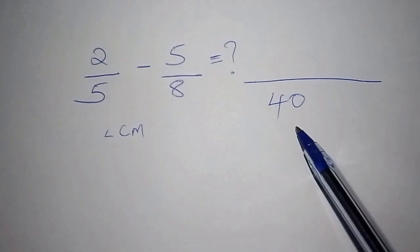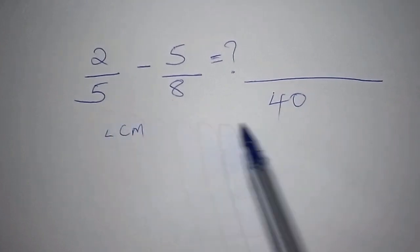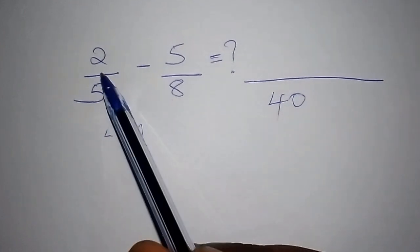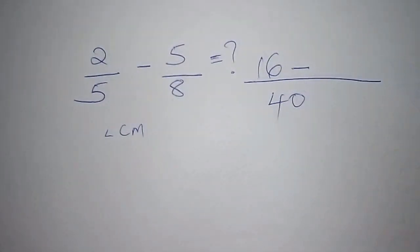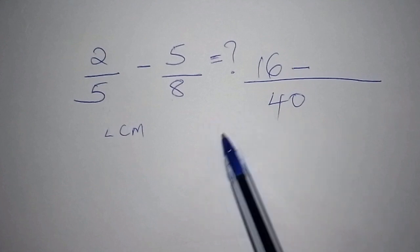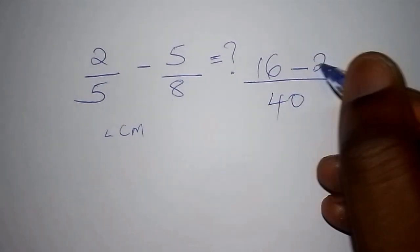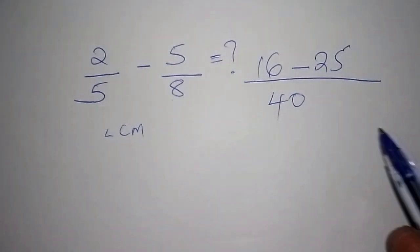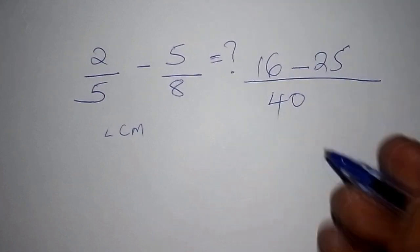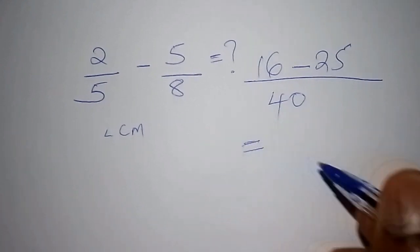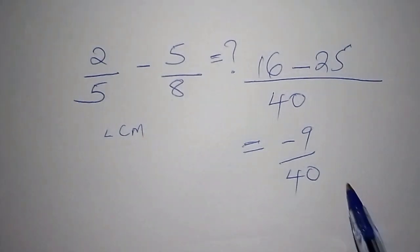Our LCM is 40, because 5 multiplied by 8 is 40. From there, we pick the number that goes into 5 — 8 goes into 40, which is 8 times — and 8 multiplied by 2 is 16. Then 8 goes into 40 five times, and 5 times 5 is 25. So we are left with 16 minus 25, and our final answer is negative 9 over 40.